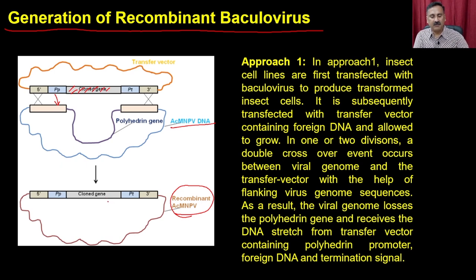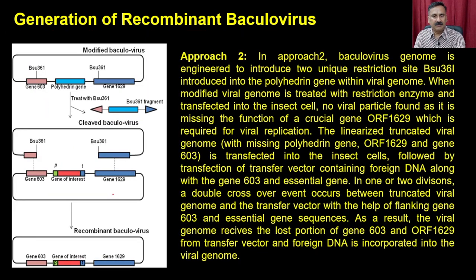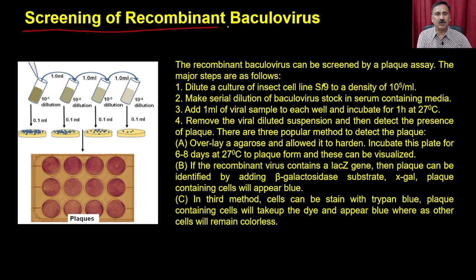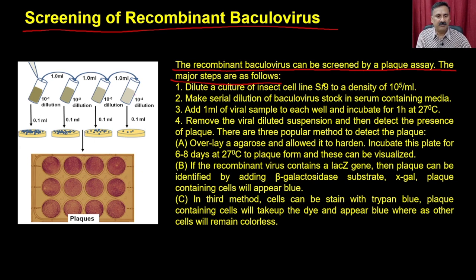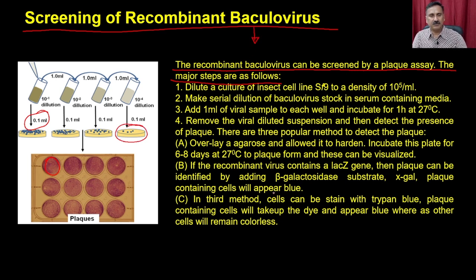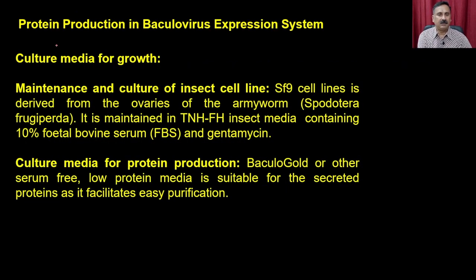The recombinant vector is used for further infection into insect cells. The recombinant baculovirus can be screened by a plaque assay - first you do a serial dilution of the virus using multiple methods, then take a small aliquot and check whether it is forming a plaque or not. By doing so, you can screen the recombinant baculovirus that has the gene of interest, and use that for further protein production.